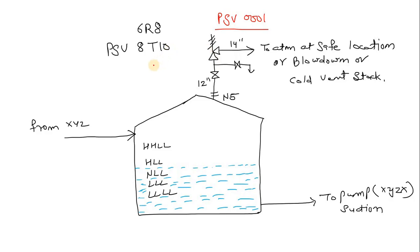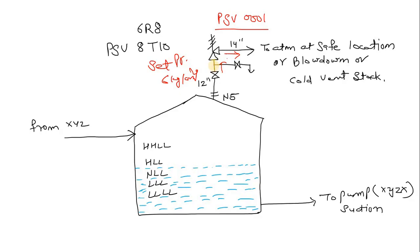For example, if the set pressure of this PSV is 6 kg per centimeter square gauge, then when the pressure within the tank achieves 6 kg/cm², the PSV will pop up and the fluid will relieve. When the pressure decreases below 6 kg/cm², the PSV will close down. I have already prepared videos about how the PSV works — you can watch those as well.